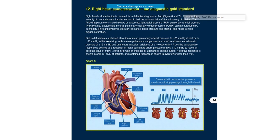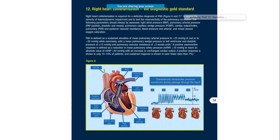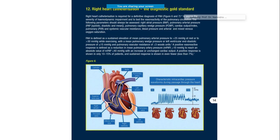A patient is classified as having PAH when there is sustained elevation of mean pulmonary arterial pressure more than 25 mmHg at rest and 13 mmHg at exercise, with mean pulmonary wedge pressure or LV end-diastolic pressure less than 15 mmHg, and pulmonary vascular resistance more than three Wood's units. A positive vasoreactive response is defined as a reduction in mean pulmonary arterial pressure of more than 10 mmHg, reaching an absolute value of less than 40 mmHg with increased or unchanged cardiac output.